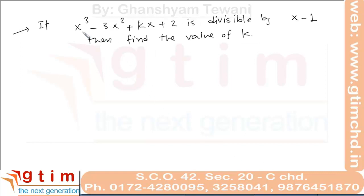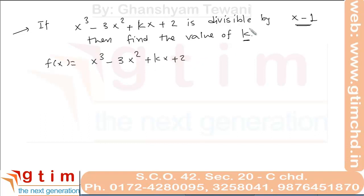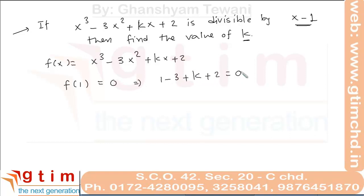Try this equation: when this cubic polynomial is divisible by x minus k, find the value of k. We consider f(x) as the cubic function. If this is divisible by x minus 1, the remainder will be 0. By the Remainder Theorem, the remainder when the polynomial is divided by x minus 1 is f(1). So f(1) equal to 0 means 1 minus 3 plus k plus 2 equal to 0, from which the value of k equals 0.